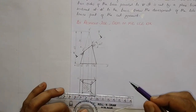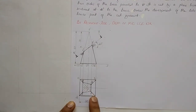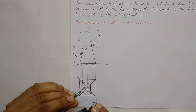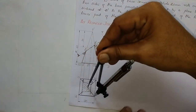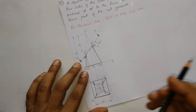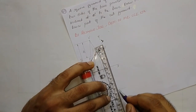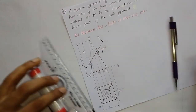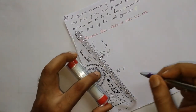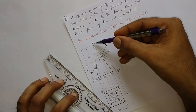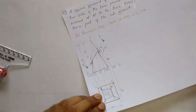We draw a reference line passing through point P parallel to the XY line, then rotate PC up to this reference line using a compass, taking measurement PC and rotating it until it meets the reference line. We mark this point as C1, then transfer C1 down to the XY line, marking the meeting point as C1'' and joining C1'' to P' with a thin line. The line P'C1'' gives us the true length of the slanting edge (generator).